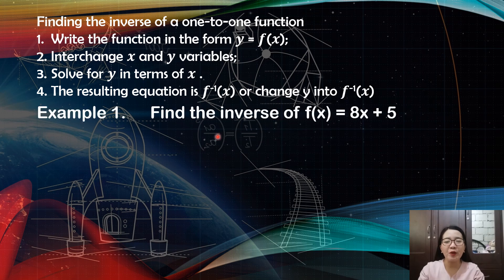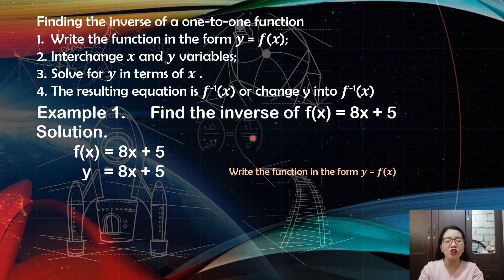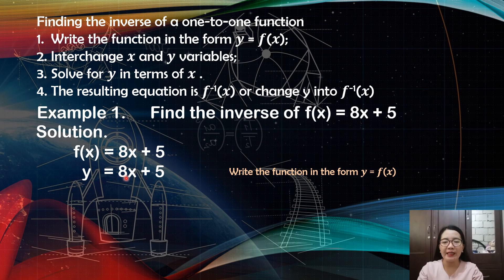Let's apply the four steps in finding the inverse of a one-to-one function. Our first step is to write the function in the form y equals f of x. That means just change f of x into y, then copy equals 8x plus 5.